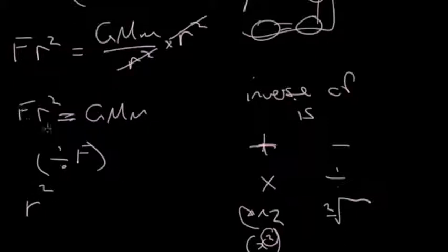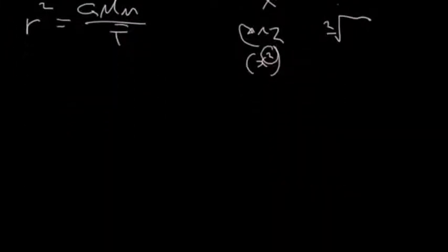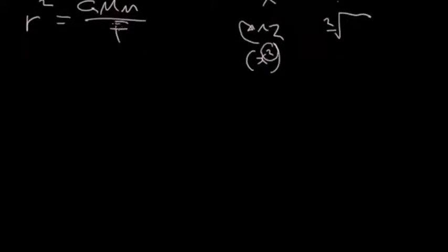And so we end up with R squared. Again, we would be having F over F, so that would cancel. So we just end up with R squared equals GMm on F. A bit more space. So now we've got this GMm on F and R squared. So now we can use this inverse to get the R by itself. And so we'll just say square root both sides.